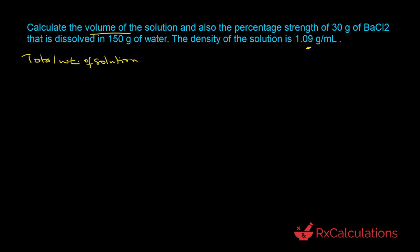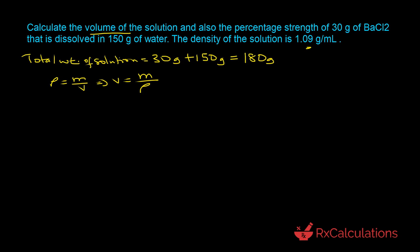The total weight of the solution equals 30 grams from the barium chloride plus 150 grams from the water, giving 180 grams. Recalling that density = mass ÷ volume, we get volume = mass ÷ density. Substituting: volume = 180 g ÷ 1.09 g/mL. The grams cancel out, and the result is 165.14 mL — that is the total volume of the solution.